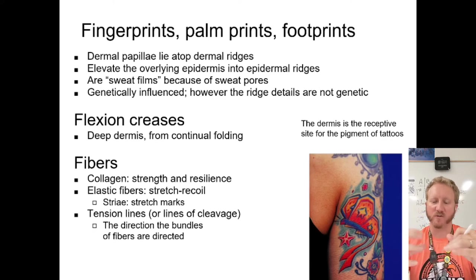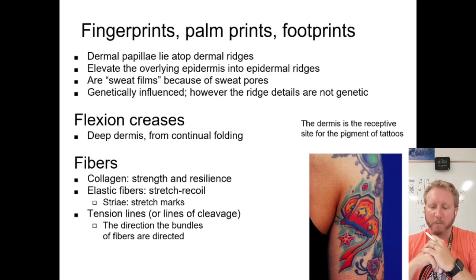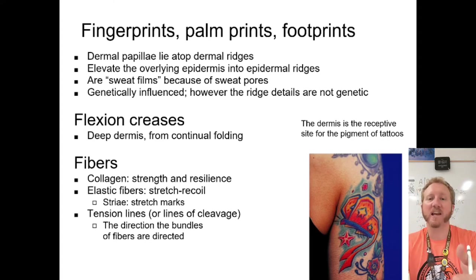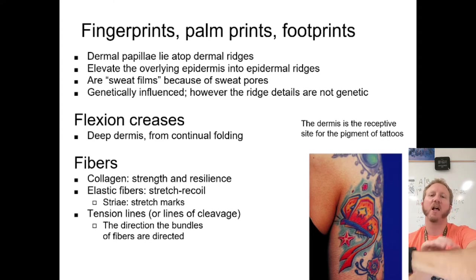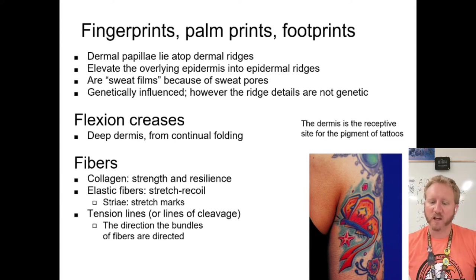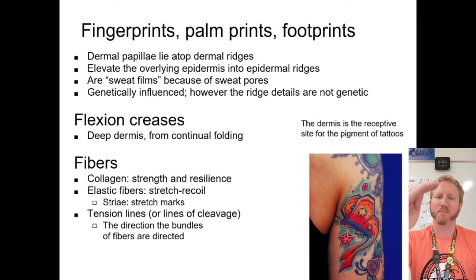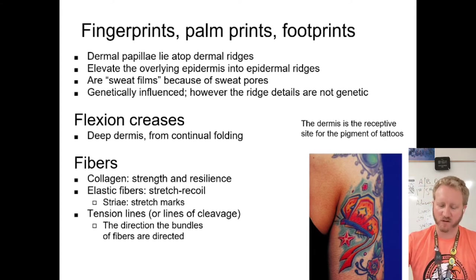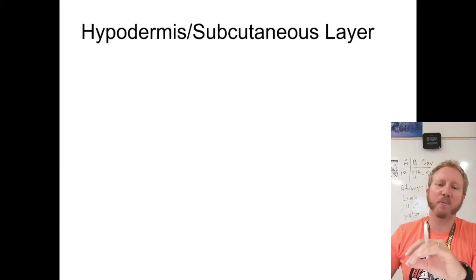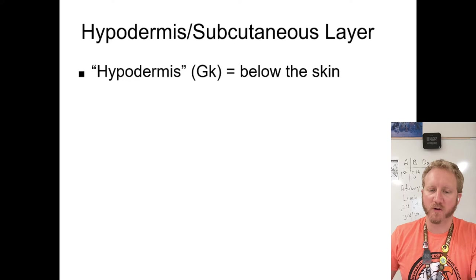Tattoos aren't 100% permanent because white blood cells break down the ink chemicals, and some cell division in the dermis causes the tattoo to spread and lose definition over time. However, dermis cells don't flake off, so the tattoo lasts. Unlike henna or permanent marker — where the colored cells flake away — tattoo ink sits beneath all of that.